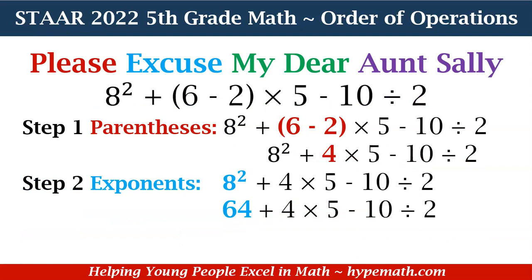Let's look at an example of how we apply PEMDAS. Our expression is 8 squared plus, in parentheses, 6 minus 2, times 5, minus 10 divided by 2. Step one, we solve what's in parentheses: 6 minus 2 equals 4. Now our expression is 8 squared plus 4 times 5 minus 10 divided by 2. Step two is exponents: 8 squared is 8 times 8, which equals 64.